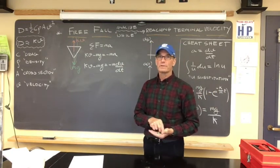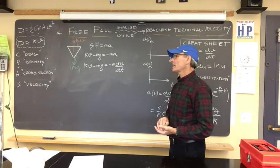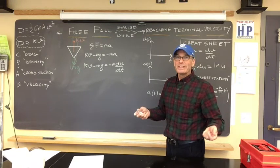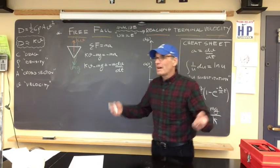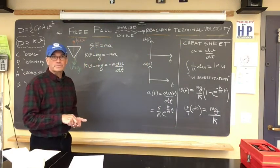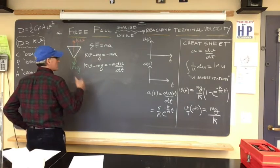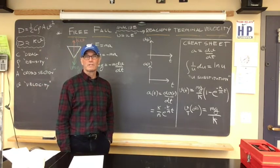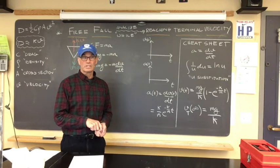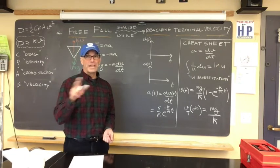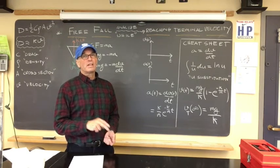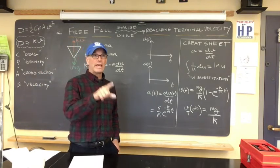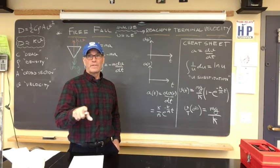I did supply the solution to the differential equation so that when we arrive at it we can compare whether or not I messed up. Here's the terminal velocity — if you allow t to go large, after a long time this would be the terminal velocity, which happens to be the coefficient on this expression. If you plug in infinity, that term goes to zero and your terminal velocity is mg over k.